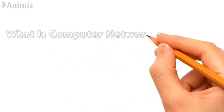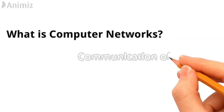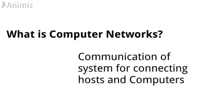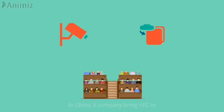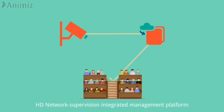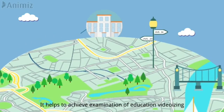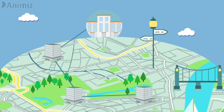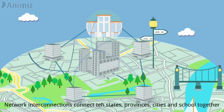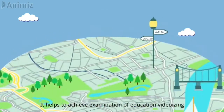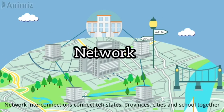First, we will talk about the Type of Computer Network. Let's talk about the communication system for connecting hosts and computers. We will talk about how computers communicate with each other. If you take a group of computers, they communicate. If you have a network that communicates with a network, you will have a network of computers. We are connected to a network — a computer, a server, a node, or a router — so there is a group of connections and the communication connections are connected to a network.